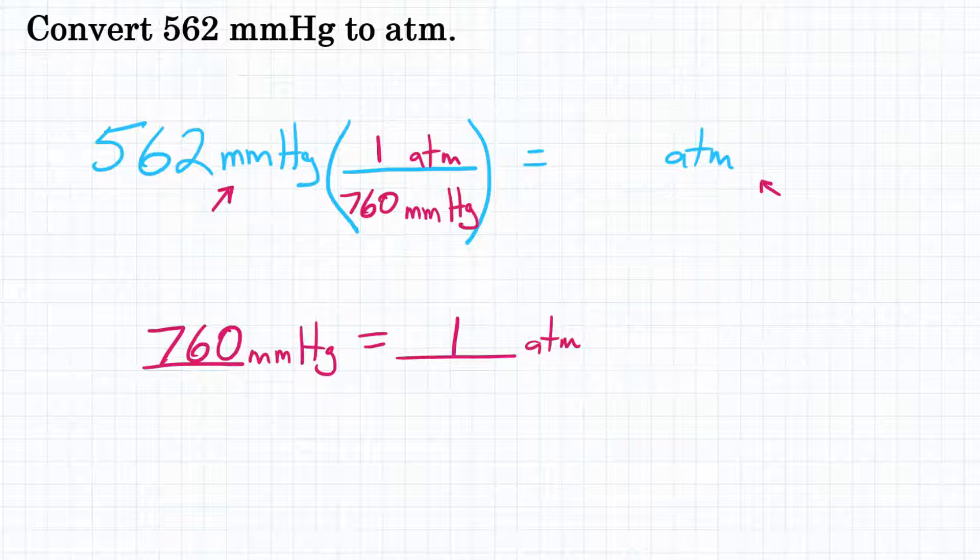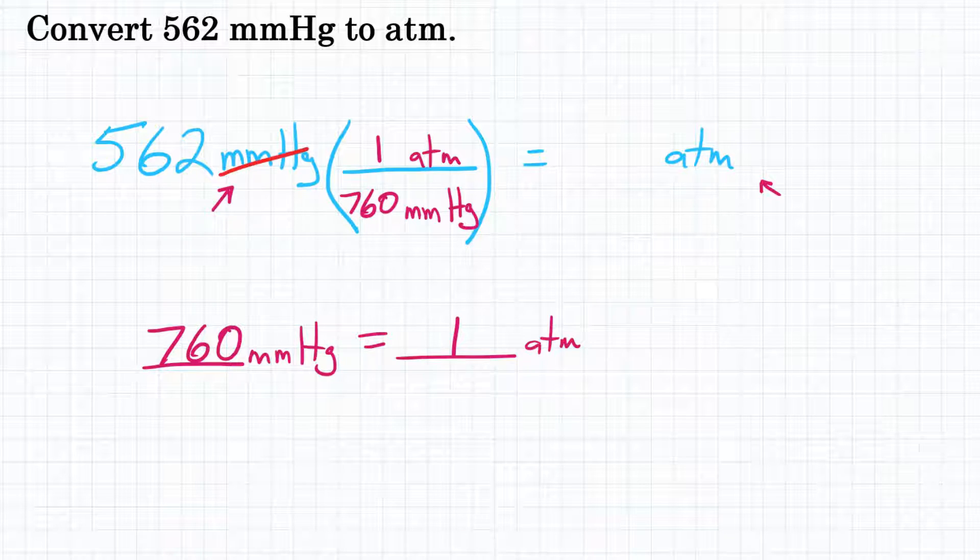We're doing this so that our units cancel out because millimeters of mercury is on top to start and on bottom of our conversion factor. They will cancel out and we are left with just atmospheres, which is exactly what we want.